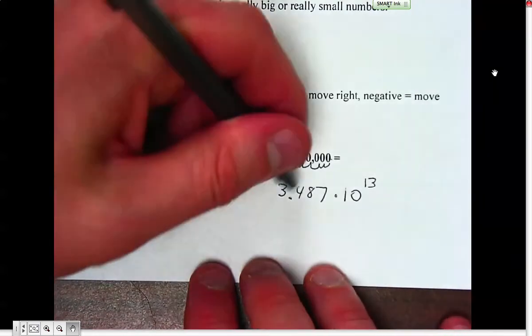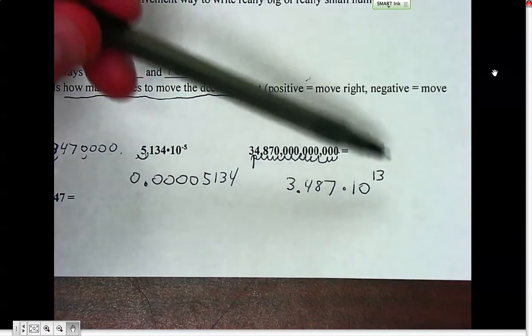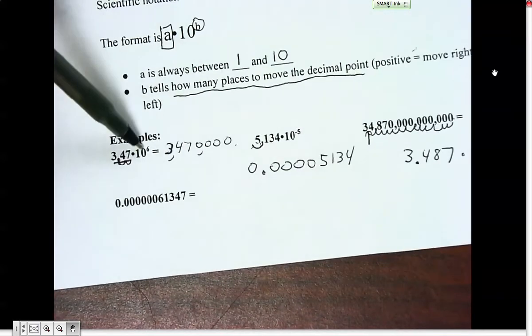So 13 places to the right. We'd read this as 3.487 times 10 to the 13th—that's the way you read it in scientific notation. It gives us a handle on how big it is. 10 to the 13th is much bigger than the 10 to the 6th we had earlier.